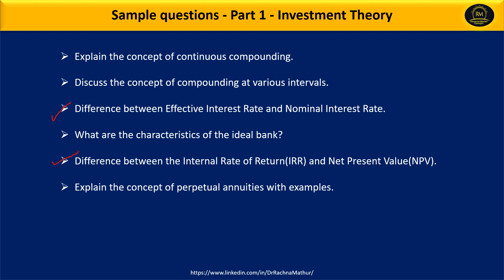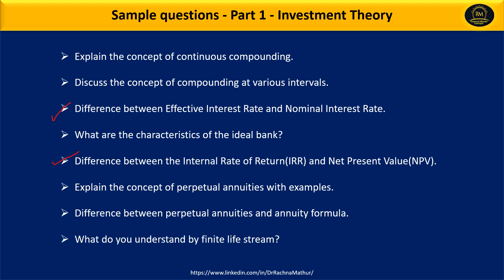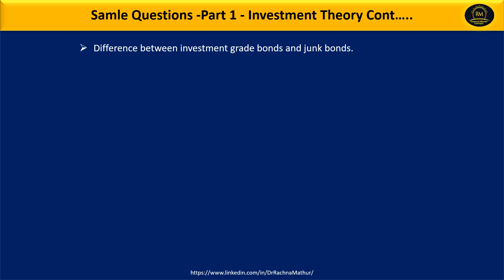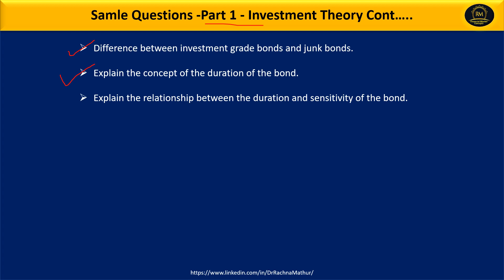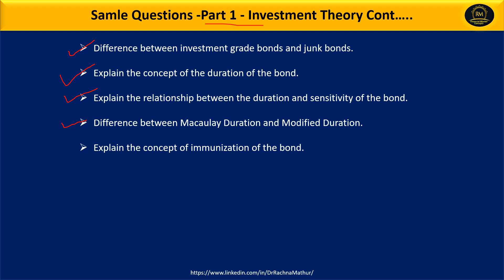Question 6 — explain the concept of perpetual annuity with example. Question 7 — difference between perpetual annuity and annuity formula. Question 8 — what do you understand by finite life stream? Question 9 — difference between investment grade bond and junk bond. Question 10 — explain the concept of duration of a bond, which is a very important part of Unit 1. Question 11 — explain the relationship between duration and sensitivity of a bond. Question 12 — difference between Macaulay duration and modified duration.